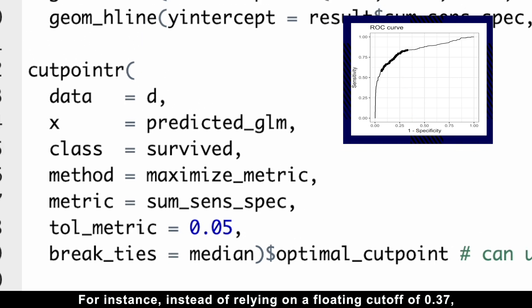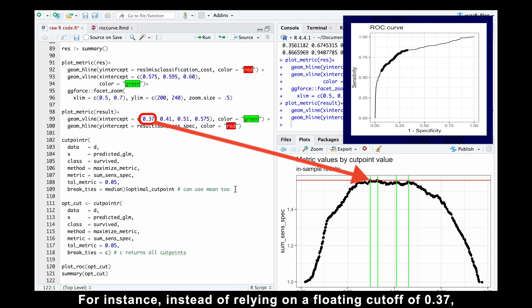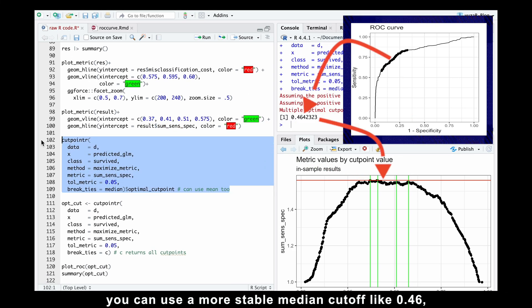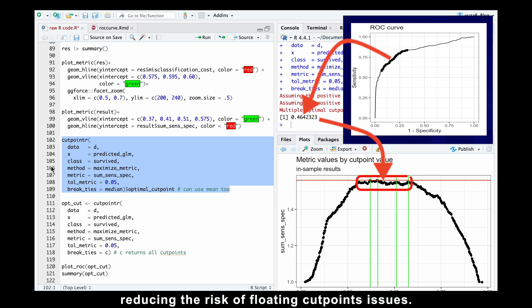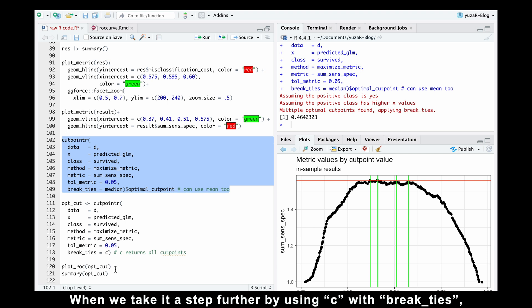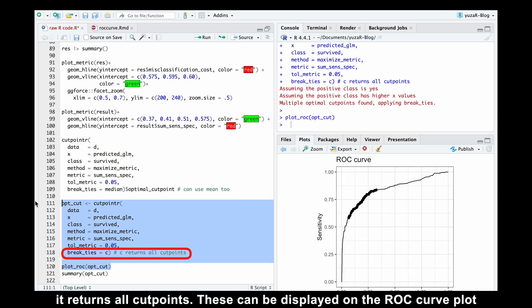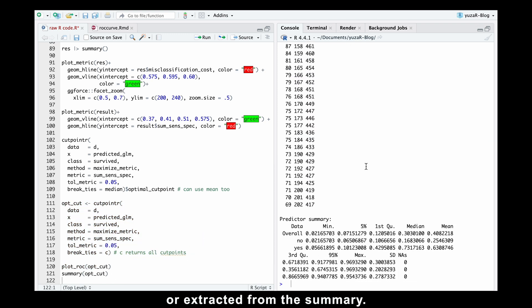For instance, instead of relying on a floating cutoff of 0.37, you can use a more stable median cutoff, like 0.46, reducing the risk of floating cutpoints issues. When we take it a step further, by using C with break ties, it returns all cutpoints. This can be displayed on the ROC curve plot or extracted from this summary. But are multiple cutpoints useful?